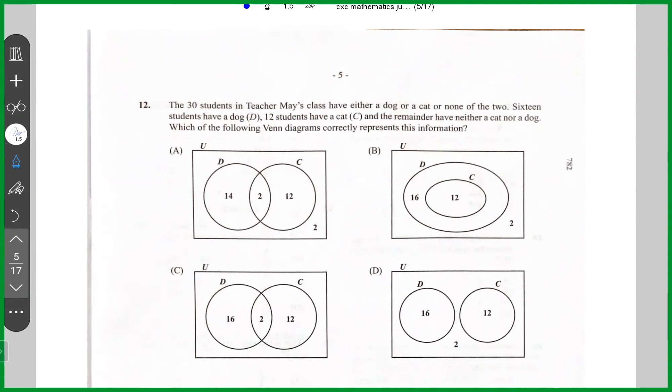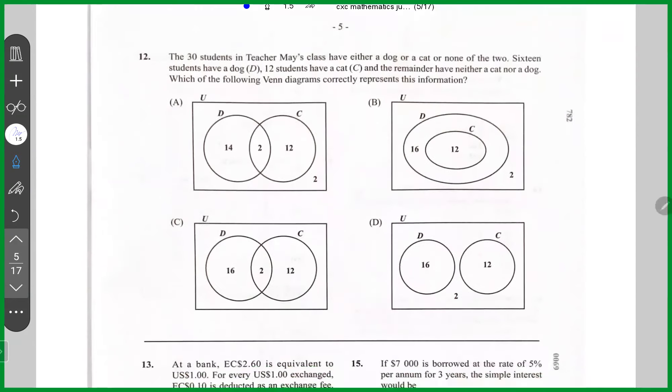Well, to me, this looks like the 16, 12 and two. They have either a dog or a cat or none of the above. So notice it did not say that there's a set of students who had both. It says either a dog or a cat or none. So there are no students who had both. So it looks like dogs and cats are disjoint. To me, the answer looks like B.